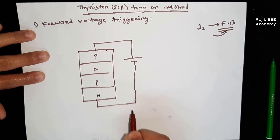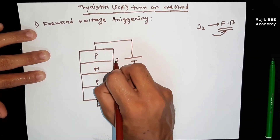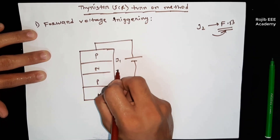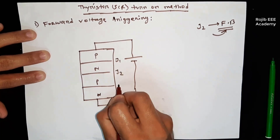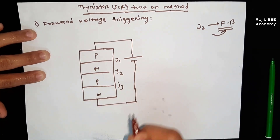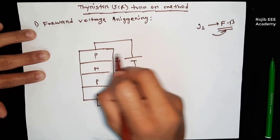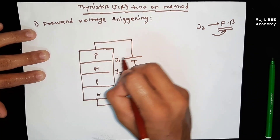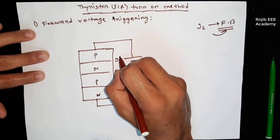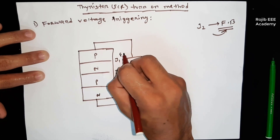We start with junction J1, junction J2, junction J3. If we start the junction J1 to the forward biased state, the thyristor can be turned on.